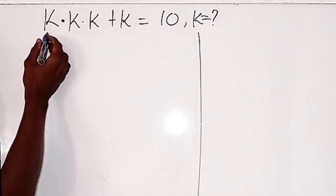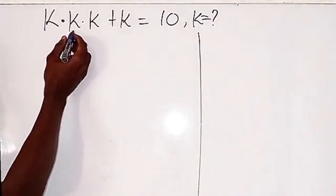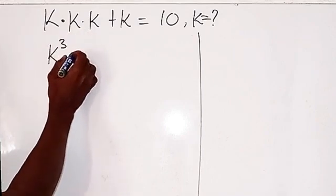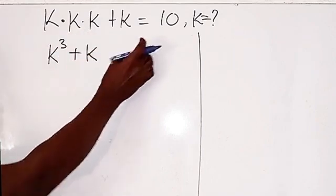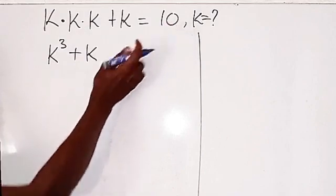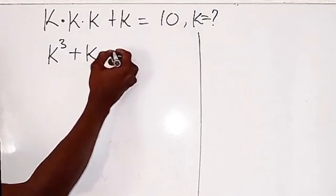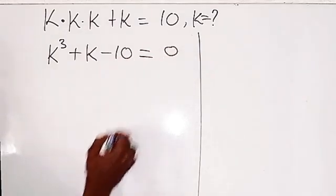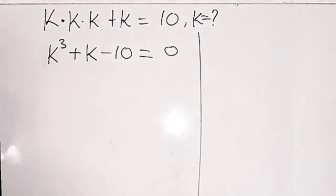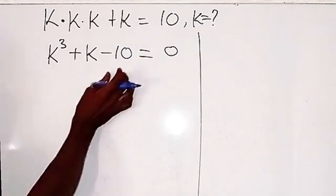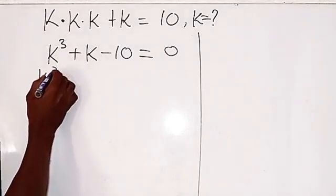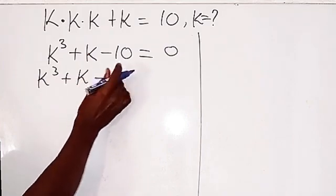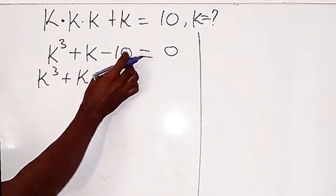So now here, you can see that k times k times k will give us k to the power of 3, then plus k. We are having 10 here. I can take the 10 to the left hand side and that will give us 0. So now from here, I can rewrite this as k to the power of 3 plus k, then minus 10.